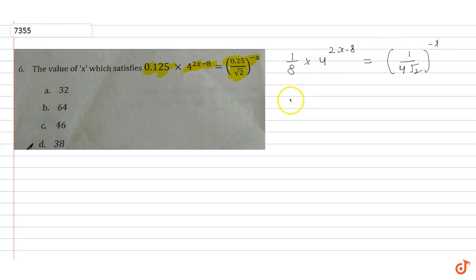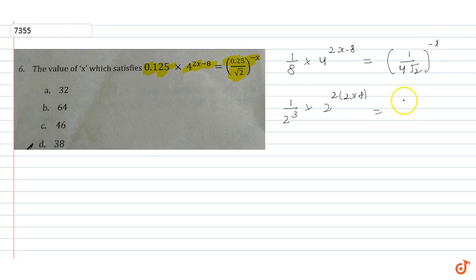Now we have to convert this into base 2: 1 upon 2 cubed into 2 raised to power 2 times of 2x minus 8, is equal to 1 upon 4 root 2 raised to power minus x. So 4 equals 2 squared, and root 2 equals 2 to the power 1 by 2, giving us 2 squared into 2 raised to power 1 by 2, all to the power minus x.